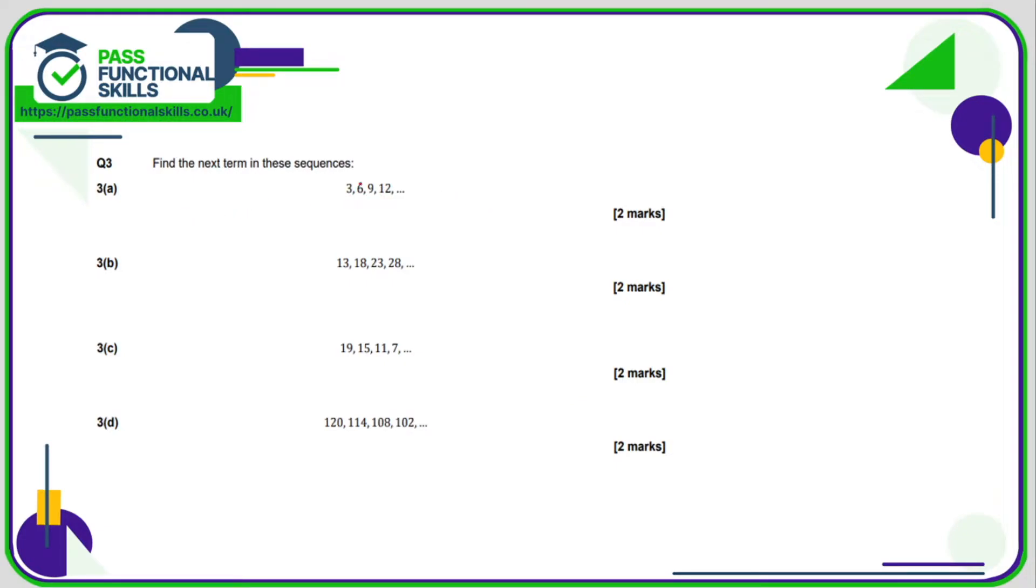Question 3a: 3, 6, 9, 12, well this is the three times table, so we're just going to be adding 3 to the next number, which is 15. 13, 18, 23, 28, we're adding 5, and 28 plus 5 is 33.